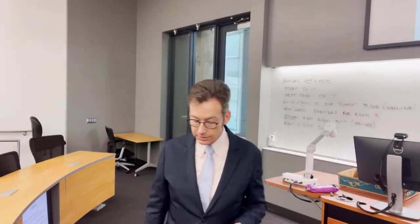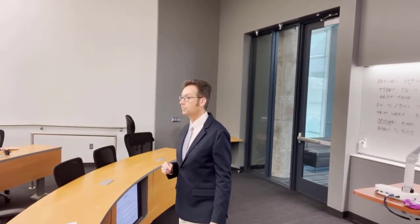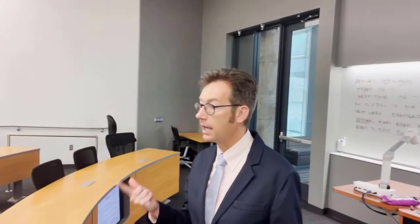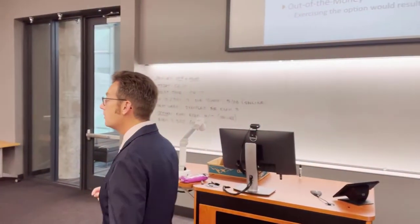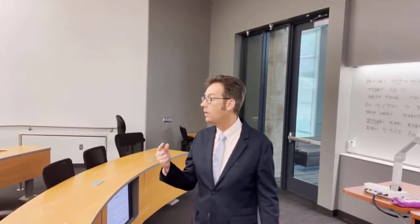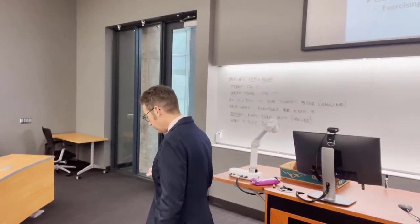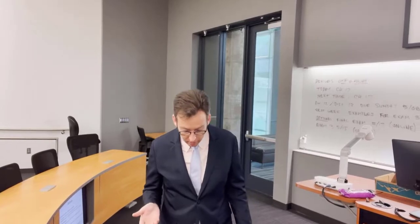Let's talk about European versus American options. A European option only allows you to exercise it at expiry — the only day you can buy or sell the underlying asset using that option is the expiration date. An American-style option allows you to exercise it anytime up to and including the expiry date.